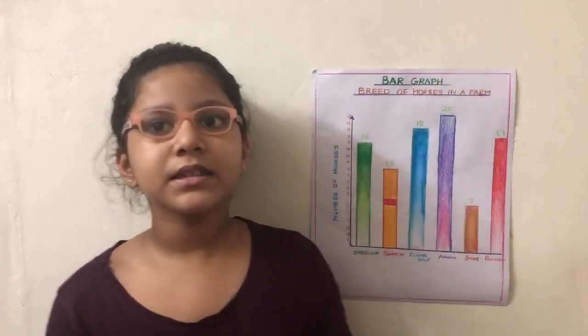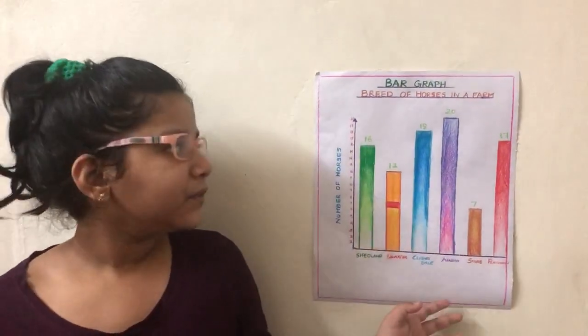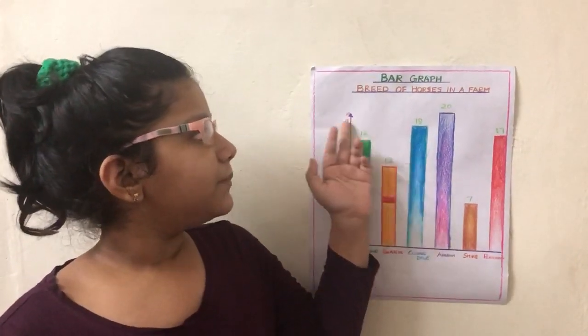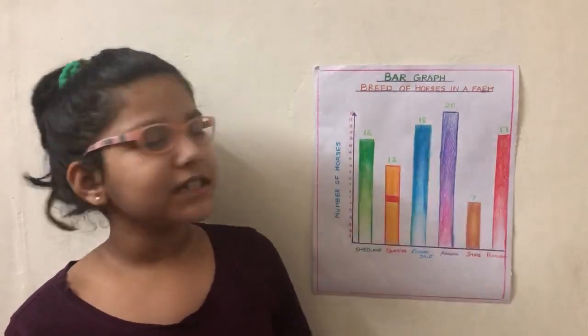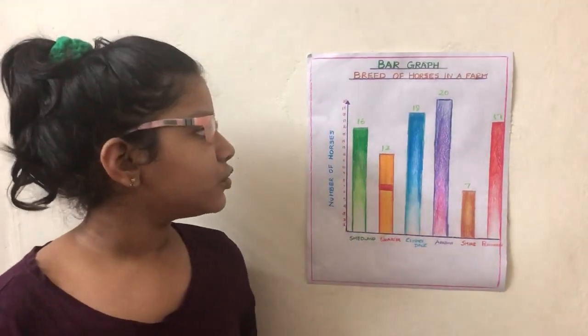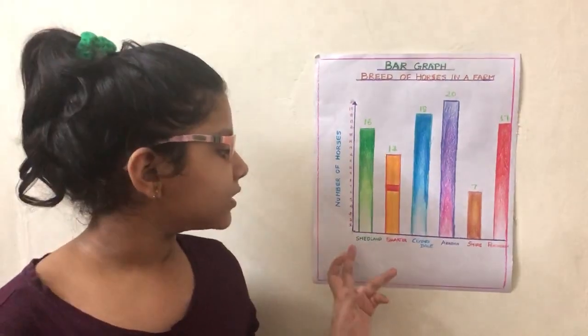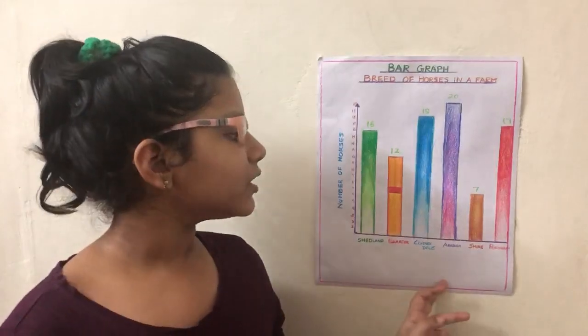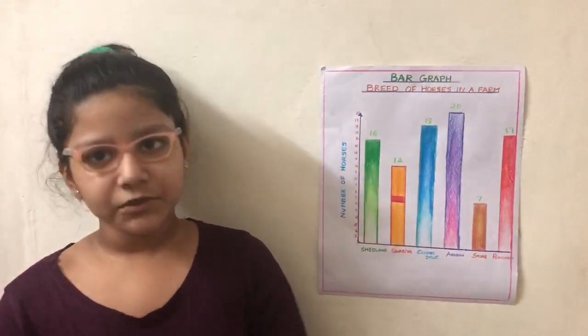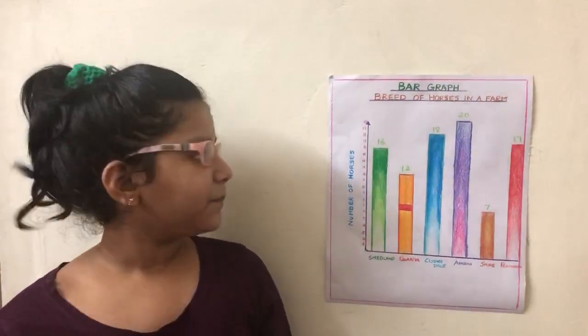This graph shows the breed of horses in a farm. The vertical line shows the number of horses and the horizontal line shows the types of horses.